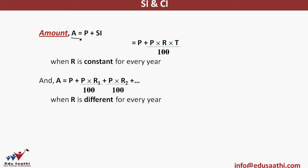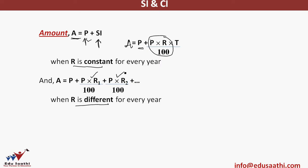Amount is the final money I get, equal to the initial principal plus the total interest accumulated over the years. If R is constant every year, the formula is P + (P × R × T / 100). This gives the total simple interest, added to the principal to give the final amount. If R is different every year, I calculate interest for each year, add them to the principal, and that gives my final amount.